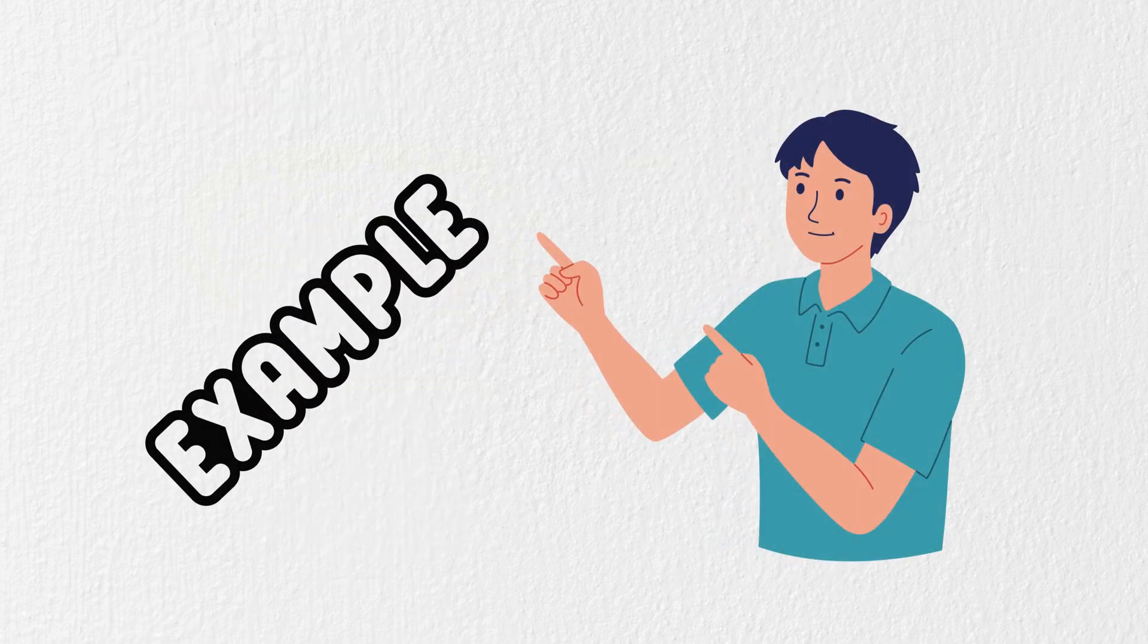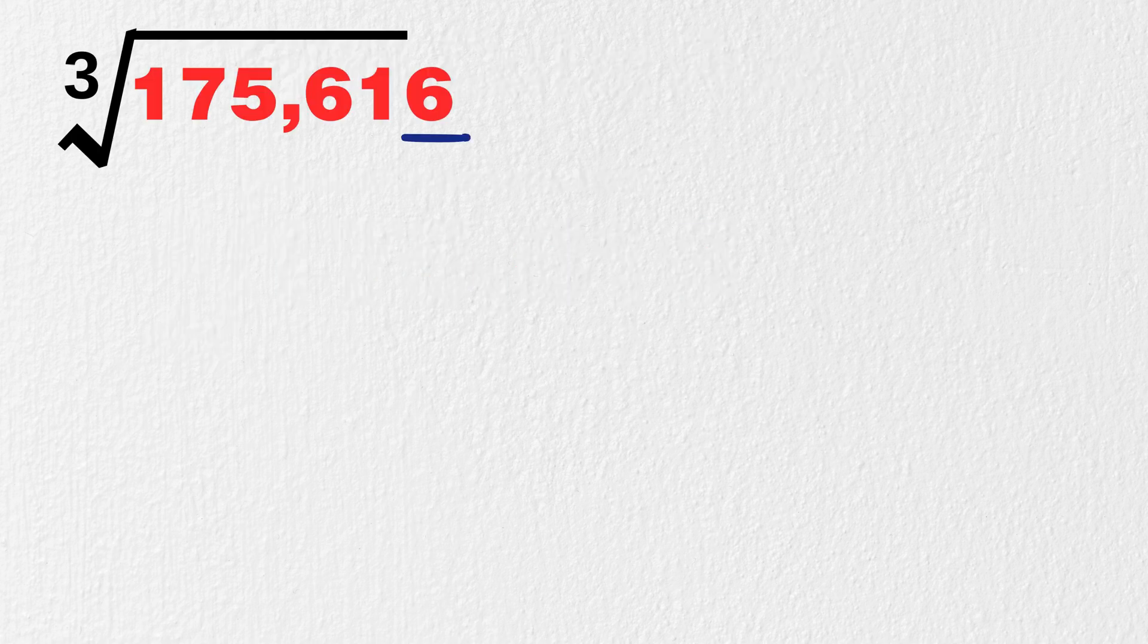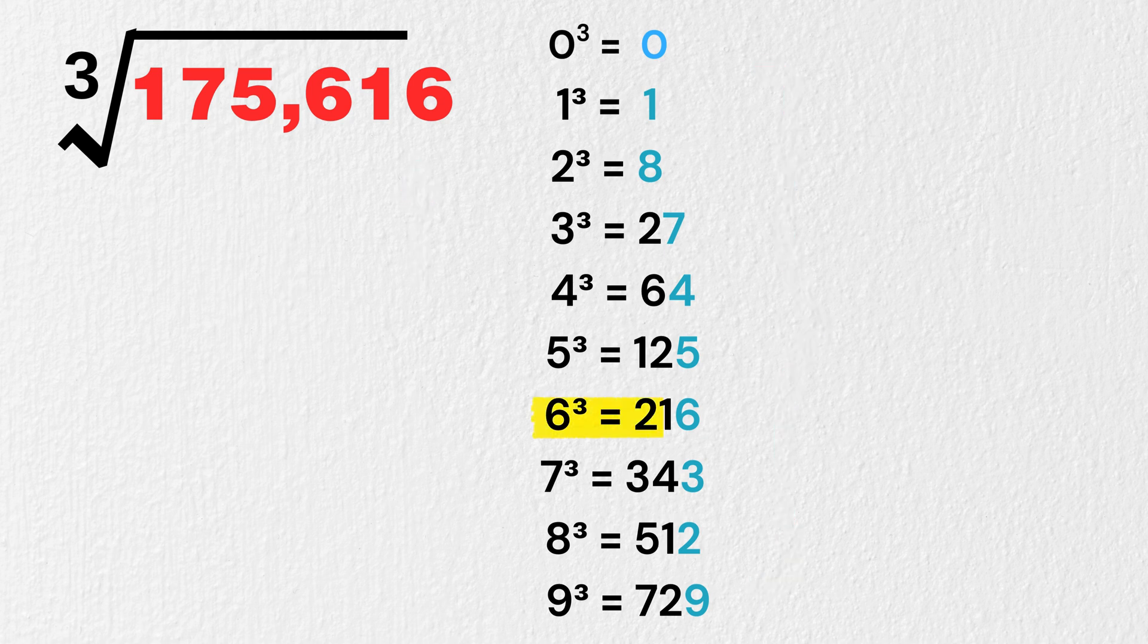Let's try another example with bigger number. Find cube root of 175,616. We have to look at its last digit, which is 6. And the last digit is 6 for which value here? It's 6. So, write 6 here. Now, we have to cross out last 3 digits, just like this.